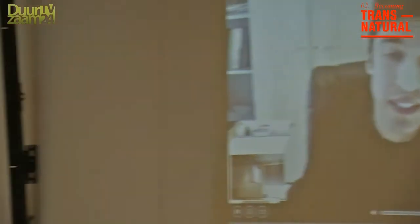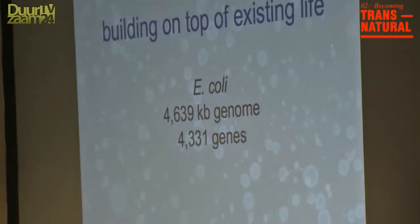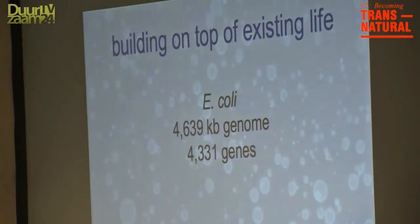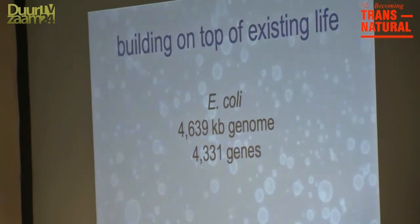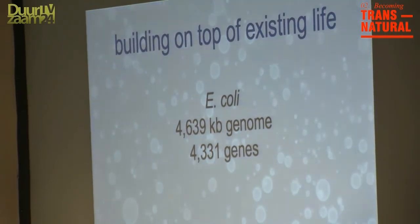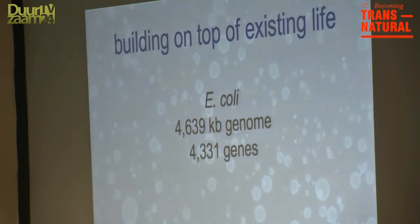Even the very simple bacterium E. coli, or at least what we like to think of as being simple, still consists of a lot of genes — over 4,000 genes in E. coli. You can really see the difficulty in trying to understand these organisms and how we can put together 4,000 components properly in order to make something alive.